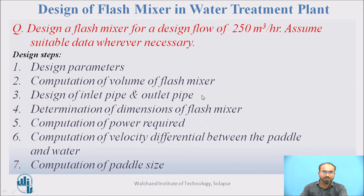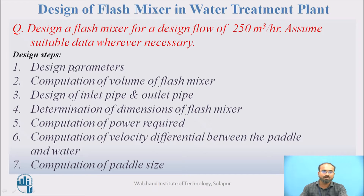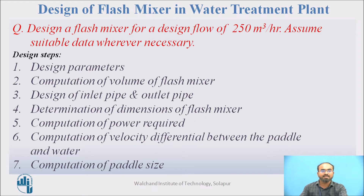Let us take a numerical example to design a flash mixer for a design flow of 250 meter cube per hour. Assume suitable data wherever necessary. The typical design steps are: first, design parameters; second, computation of volume of flash mixer; third, design of inlet and outlet pipe; fourth, determination of dimensions of flash mixer; fifth, computation of power required by the paddles; sixth, computation of velocity differential between paddle and water; and seventh, computation of final paddle size.